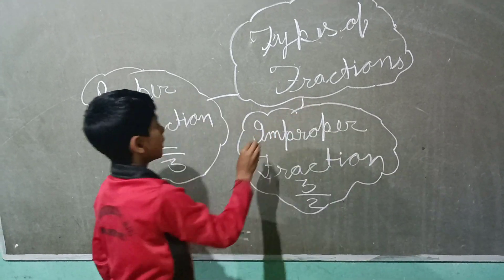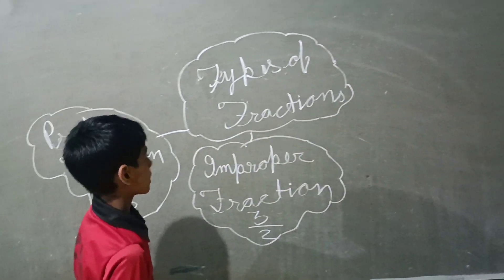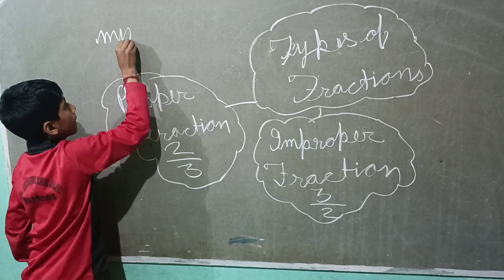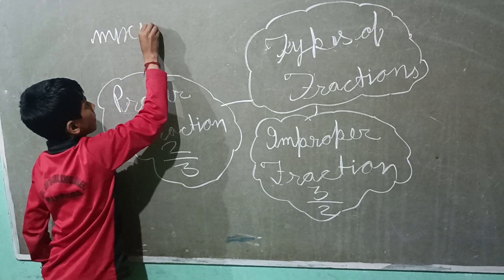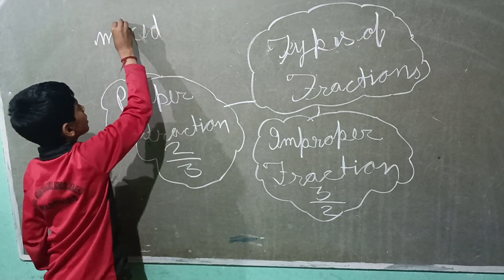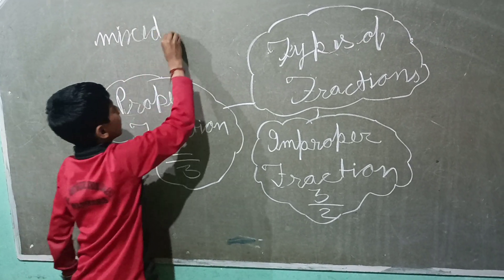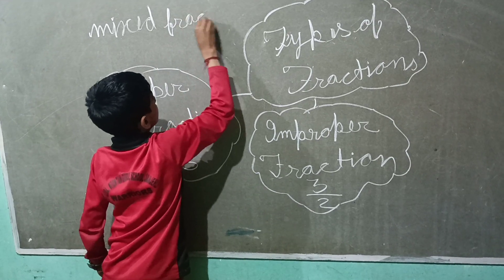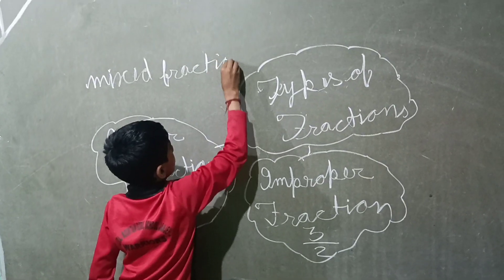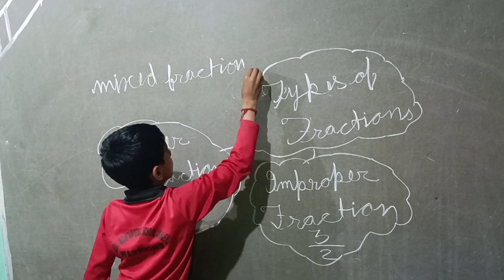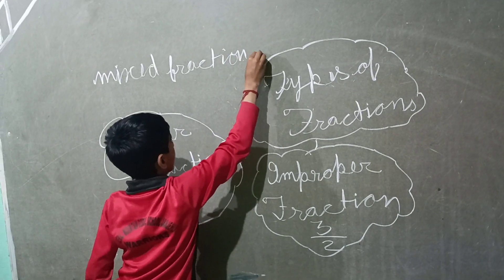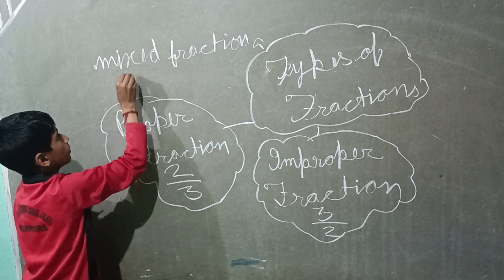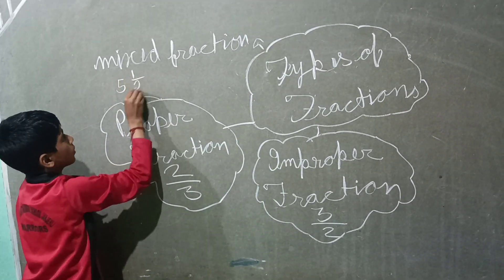Third is mixed fractions. For example, 5 and 1 upon 2.